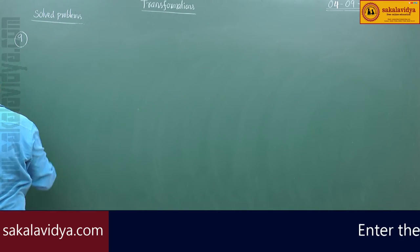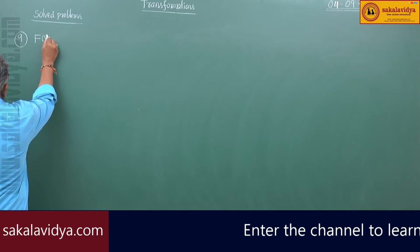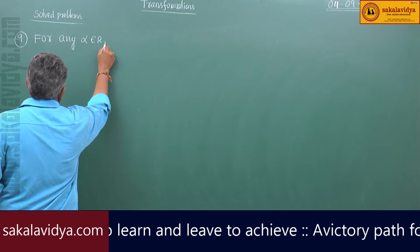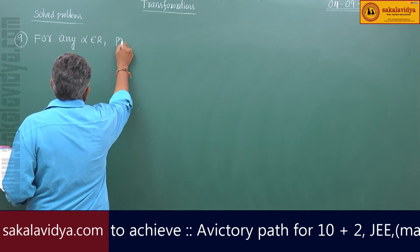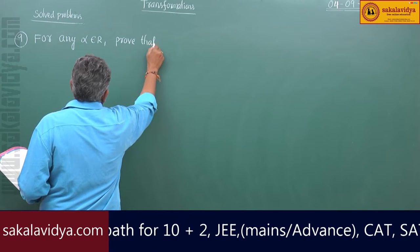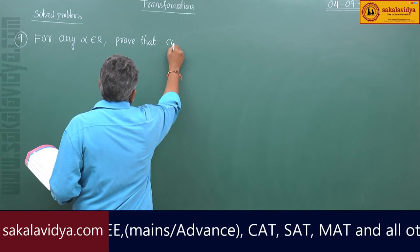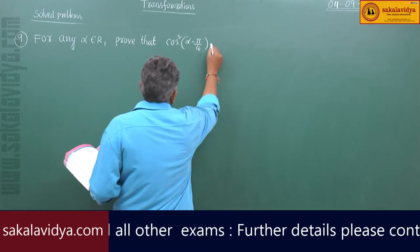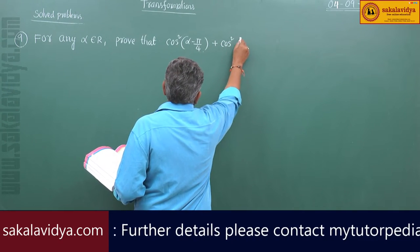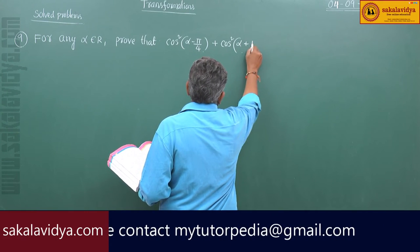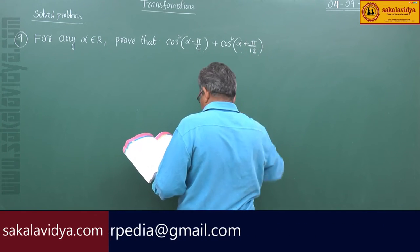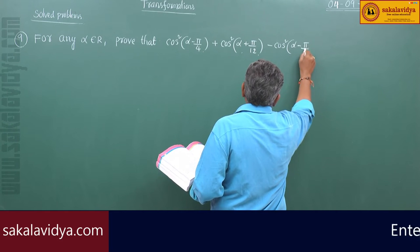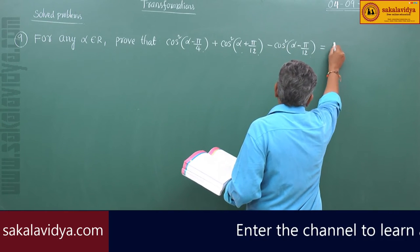9th problem. For any alpha belongs to R, prove that cos squared (alpha minus pi by 4) plus cos squared (alpha plus pi by 12) minus cos squared (alpha minus pi by 12) is equal to 1 by 2.